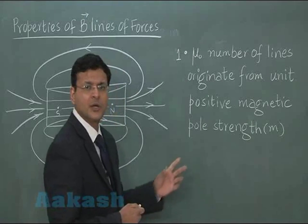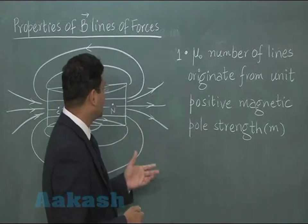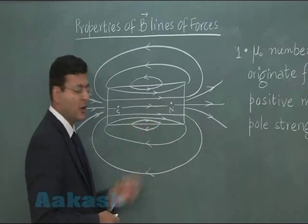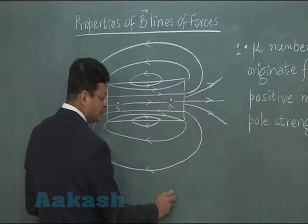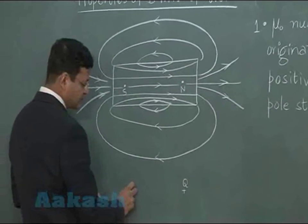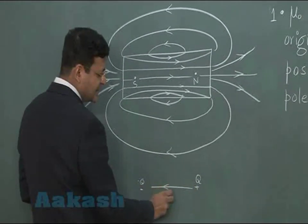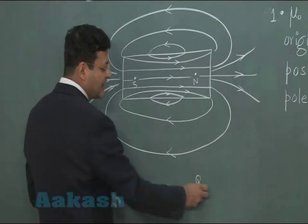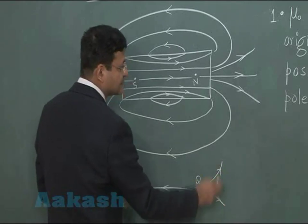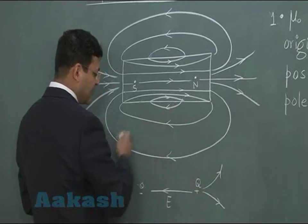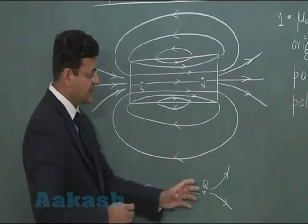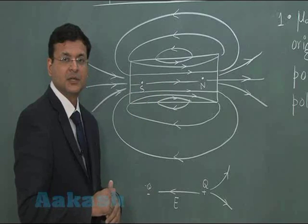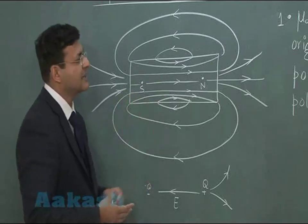As the second property, unlike electric field lines — if you remember, they start at a particular point, say a positive charge +q and a negative charge −q, and the electric lines started from some point and terminated at some particular point. But no such thing will be seen here. Unlike electrostatic lines, magnetic lines always form closed loops.